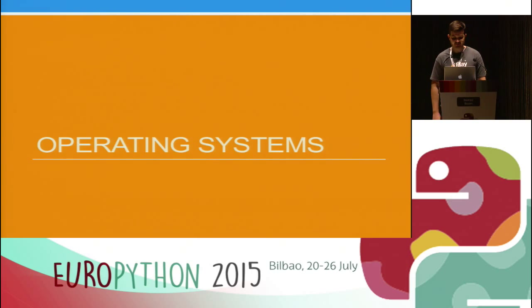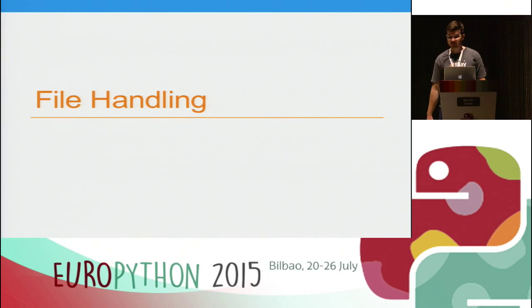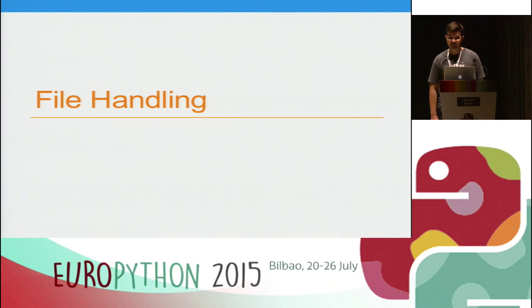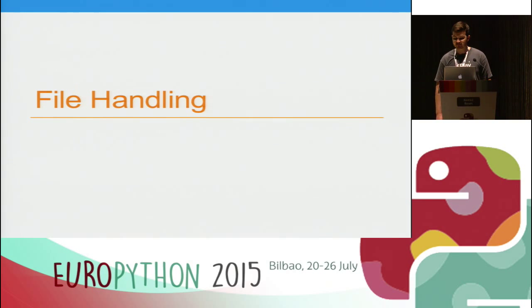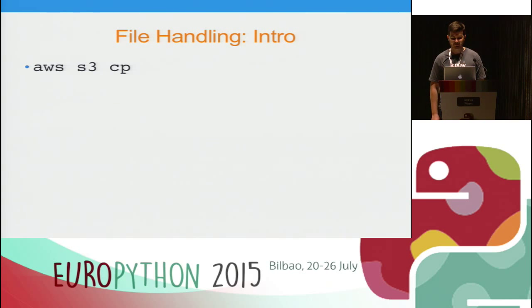Next I'm going to talk about operating systems and how to get compatibility across all the different ones you may run into. The first topic is file handling, then file paths, and finally differences in functionality across operating systems. If you have a Python application, you'll most likely have to deal with files. The interface is pretty similar across operating systems — you can open a file for reading, writing, or in bytes mode — but it's really the undocumented functionality you've got to be aware of.